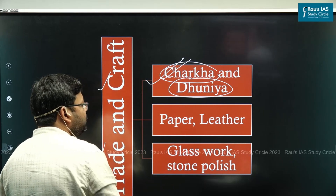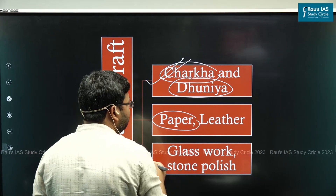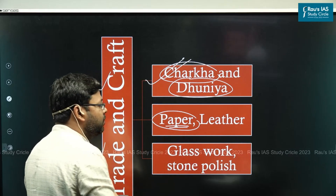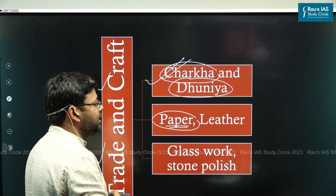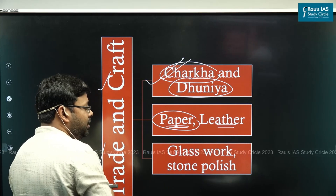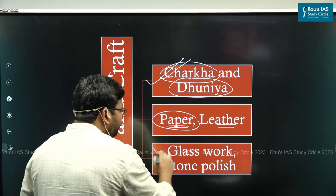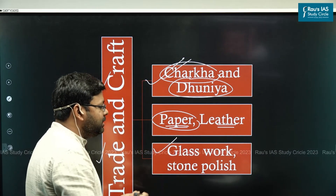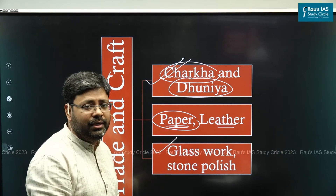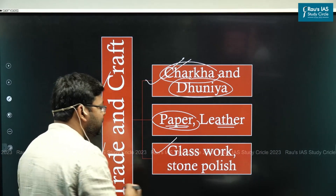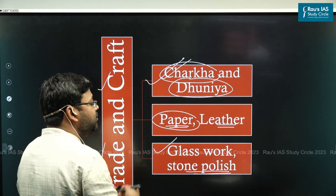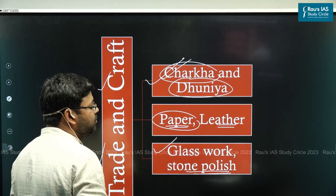Not only this, Sultans introduced so many new techniques of paper production because the demand for paper was constantly increasing. Leather protection technique improved. Coming from Central Asia and the Middle East, new techniques improved glasswork production in India. Not only this, stone polish became much better because of the new techniques introduced at that time.